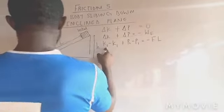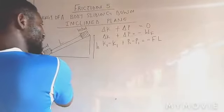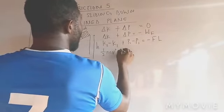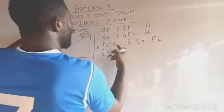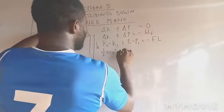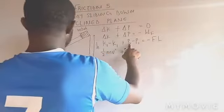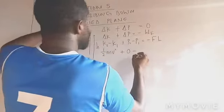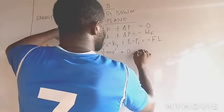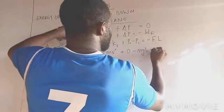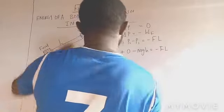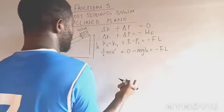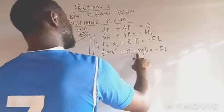Our K2 here, that is the kinetic energy here, half MV squared minus initial is zero. Plus potential energy 2 here is zero minus initial which is MGH. So MGH is equal to negative FL. So what is going to happen now, I can take this one here.